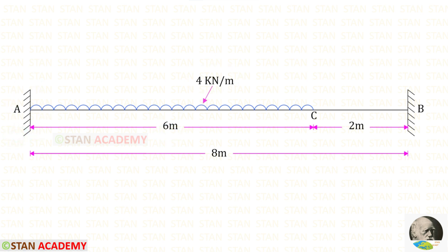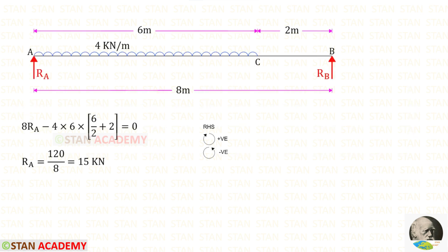Now we are going to find the moments MA and MB using the moment area method. In the moment area method, first we have to convert this fixed beam into a simply supported beam. You can see that I have converted the fixed beam into a simply supported beam. In this beam we have to find the vertical reactions.